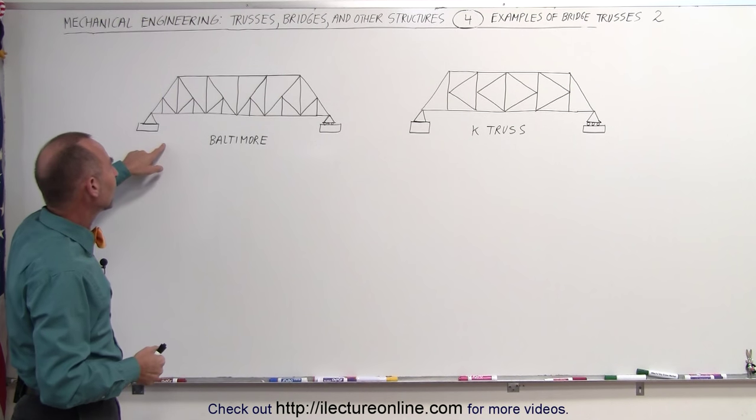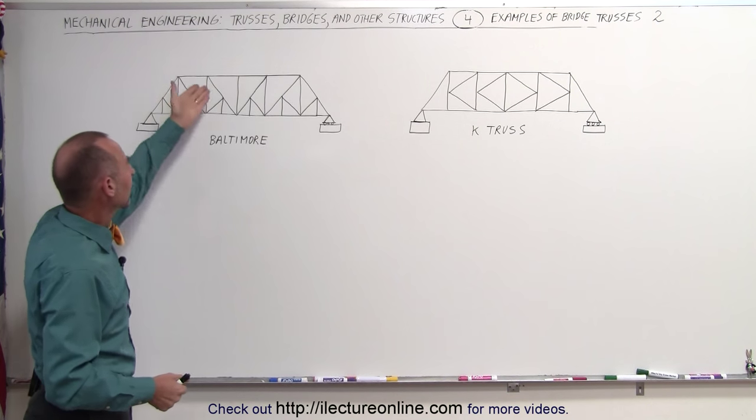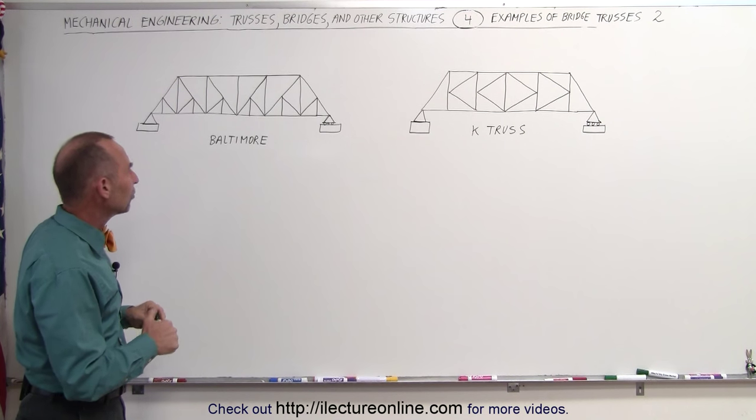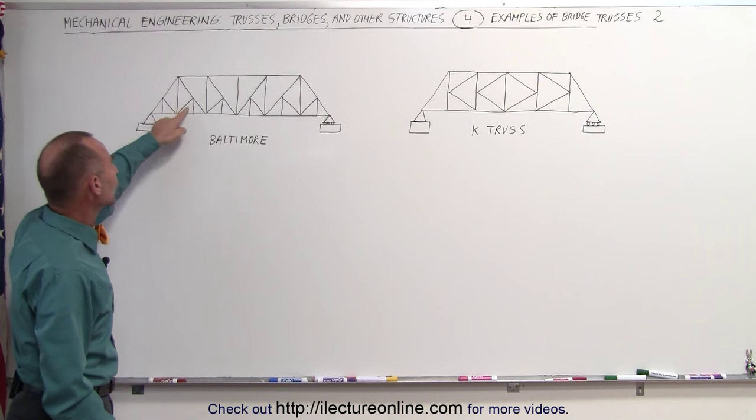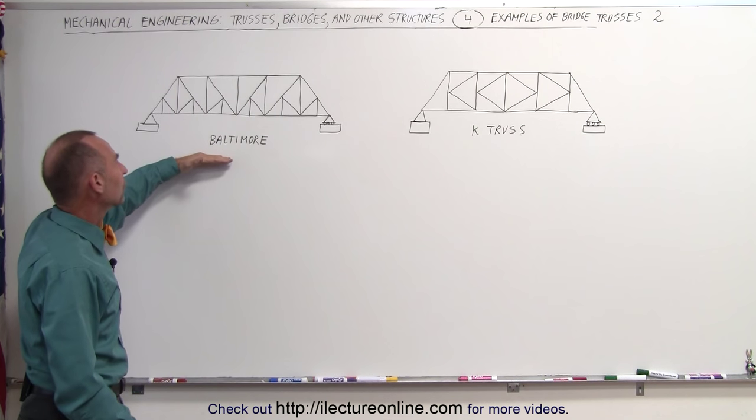So again, notice that here we have a substructure of trusses to support the larger overall structure of the original truss. And if you look carefully, you can see that if you take those small substructures out, you end up with the Pratt structure or the Pratt truss.